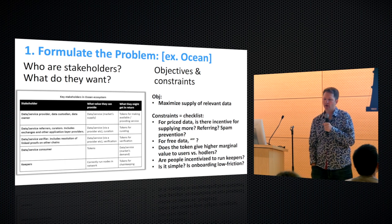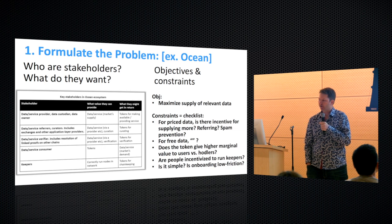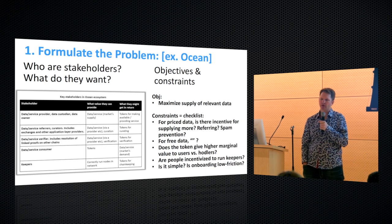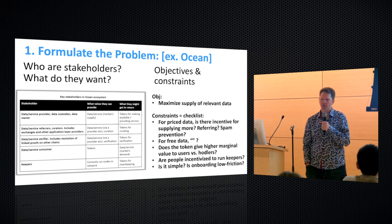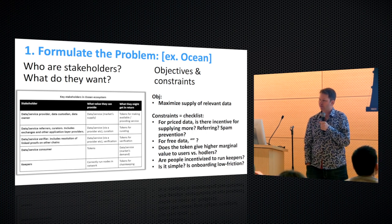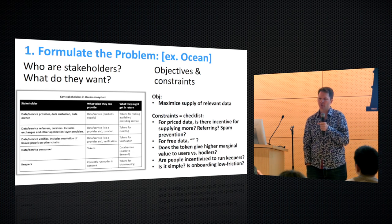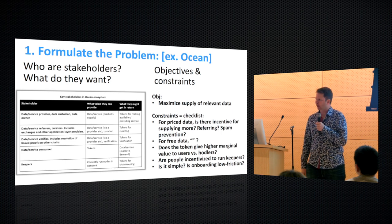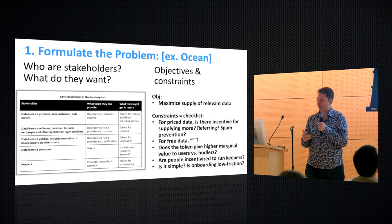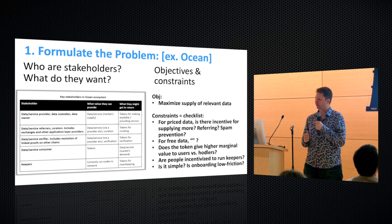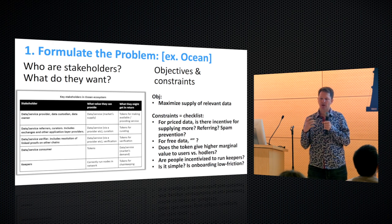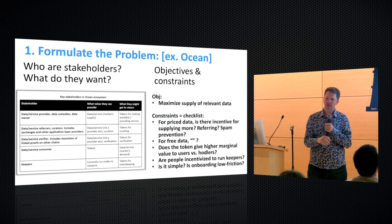From that, you can start turning those gives and gets into objectives and constraints. It's really useful to ask: what am I trying to maximize or minimize in this system? You brainstorm and come up with 10 or 20 things over beers or otherwise. With Ocean, we ended up with the objective function: maximize the supply of relevant data. With that objective function, we cast it into a block rewards function that gives out Ocean tokens when people do that. We had a checklist of constraints — things like: are there incentives for supplying more data? Are there incentives for referring? Is there something about spam prevention? What about free data versus priced data, for both data marketplaces and the data commons?